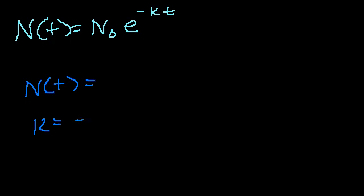Let's say that k is equal to 0.05. So its exponential decay formula would be the amount that you start off with, times e to the minus 0.05t.